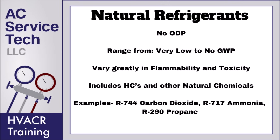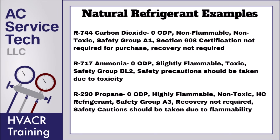Natural refrigerants have no ODP and range from very low to no global warming potential, and they vary greatly in flammability and toxicity. This category includes HC refrigerants as well as other natural chemicals. R744 is carbon dioxide: zero ODP, non-flammable, non-toxic, safety group A1, and section 608 certification is not needed to purchase R744. R717 is ammonia: zero ODP, slightly flammable, toxic, safety group B2L, and safety precautions should be taken due to toxicity. R290 is propane: zero ODP, highly flammable, non-toxic, HC refrigerant, safety group A3, and recovery is not required, though safety caution should be taken due to flammability.